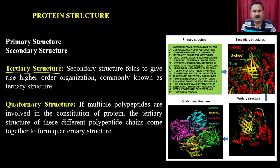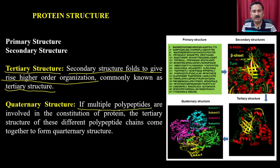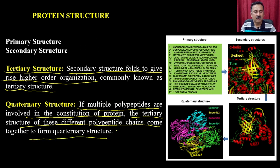In the tertiary structure, the secondary structures fold to give a higher order organization, commonly known as tertiary structures, whereas quaternary structure is present if multiple polypeptides are involved, and the tertiary structures of these different polypeptide chains come together to form the quaternary structures. The tertiary structure is a very complicated structure of the protein where many secondary and super secondary structures come together and give rise to the tertiary structure.